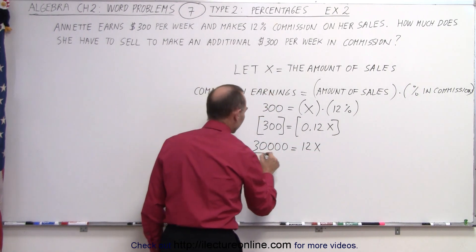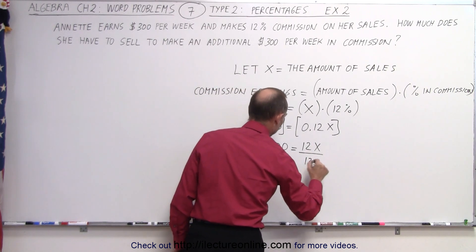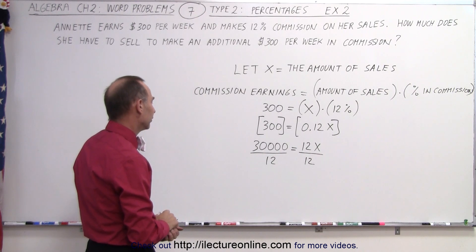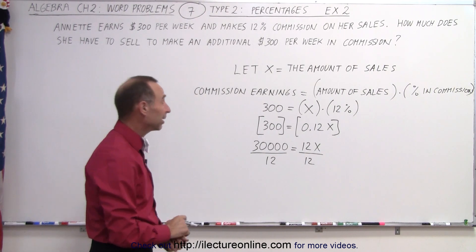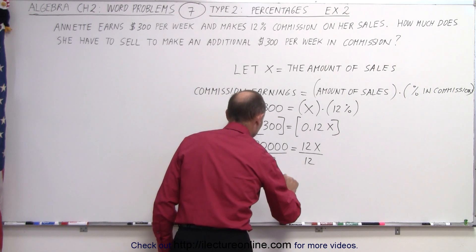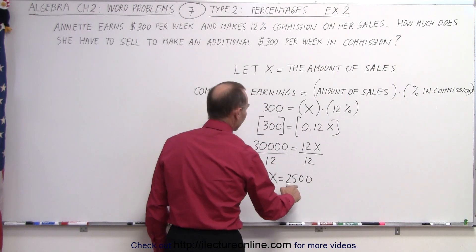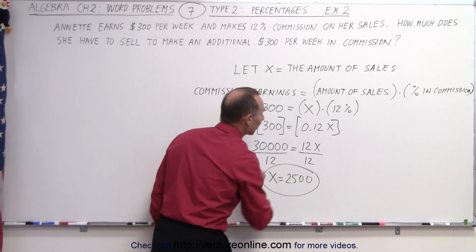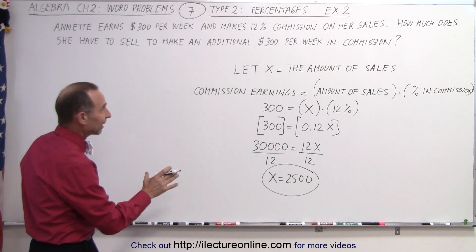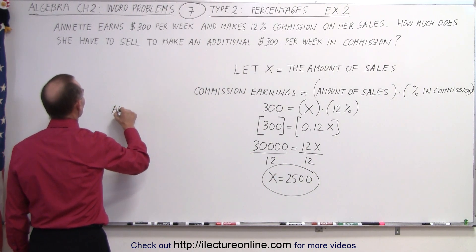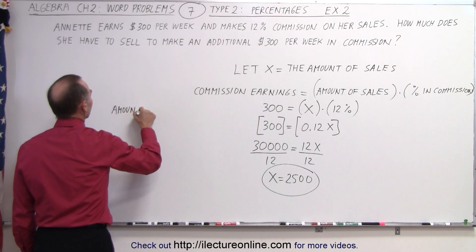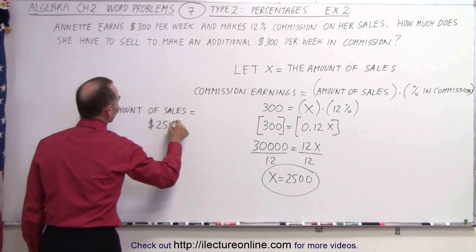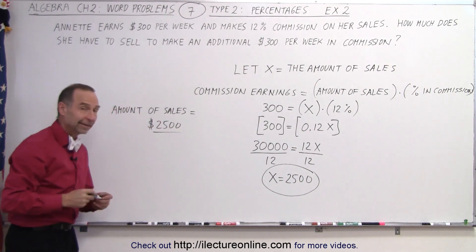Finally, we divide both sides by the numerical coefficient. 30,000 divided by 12 would be 2,500. So X equals 2,500. Since X was defined as the amount of sales, that means the amount of sales required to make $300 in commission must equal $2,500. And that is how it's done.